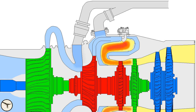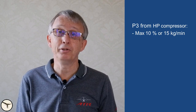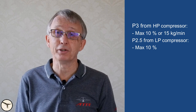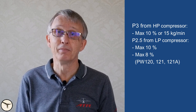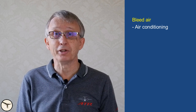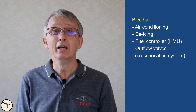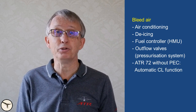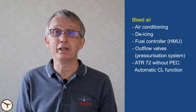Bleed air is extracted from two places. LP air, or P2.5, is vented from the HP compressor intake. HP air, or P3, is vented from the HP compressor outlet. Maximum bleed air extraction for external use is 10% of 15 kg per cent from the LP compressor, except for PW120, 121 and 121 alpha variants which have 8%. This bleed air supplies the air conditioning system, the de-icing system, the fuel controller, the HMU, the outflow valves in the pressurization system, and in ATR 72 without PEC it is used to move the condition lever fully forward when power is increased during a go-around. Most systems use HP bleed air.